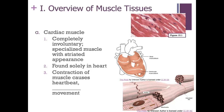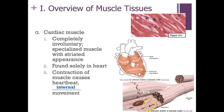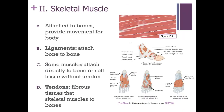Cardiac muscle tissue is also completely involuntary and has a striated appearance. We find cardiac muscle solely in the heart; its contraction causes the heartbeat. Most cardiac muscle cells have a centrally located nucleus, and there are intercalated discs — which are gap junctions — through which ions can easily flow from one cell to another.